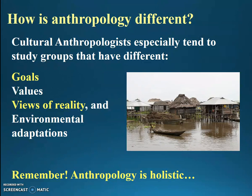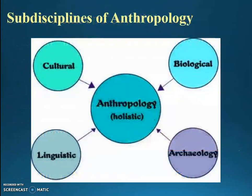Remember, anthropology is holistic — we study everything we can about being human, not just this or that about being human. Good anthropological research should open our eyes to things we didn't know before, and it really should surprise us. Anthropology is the study of human species and its immediate ancestors at all times and all places. The goal is to make sense of the underlying logic of what people do — understanding the why of a people or a culture.